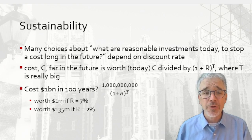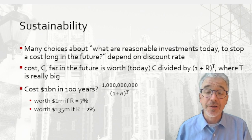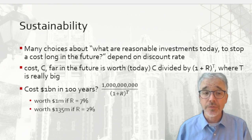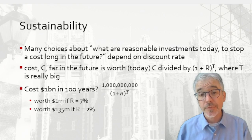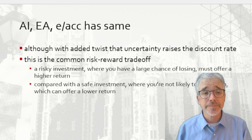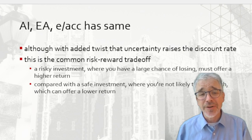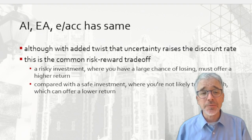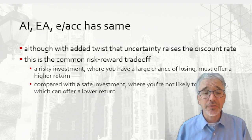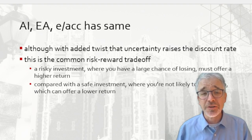There are also philosophical issues: is it moral to discount people in the future below ourselves? We often do. And finally, on a related note, questions about AI risk, effective altruism, and effective accelerationism all have that same issue.